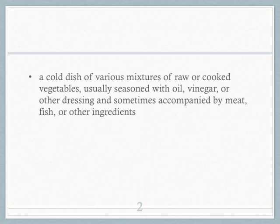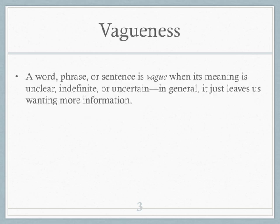All of those words I pointed out are vague — they all carry some sort of imprecision and they all leave us sometimes wanting more information. What other ingredients? What do you mean 'various mixtures'? 'Sometimes accompanied by meat' — how often? So that's what vagueness is all about. A word, phrase, or sentence is vague when its meaning is just not clear, it's indefinite, it's uncertain — and in general, it just leaves us wanting more information.